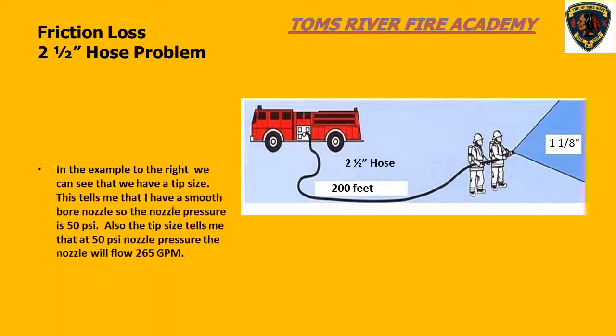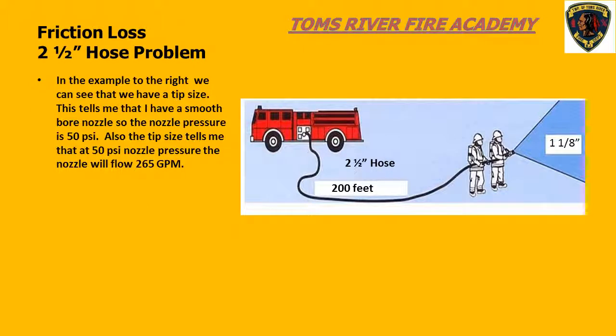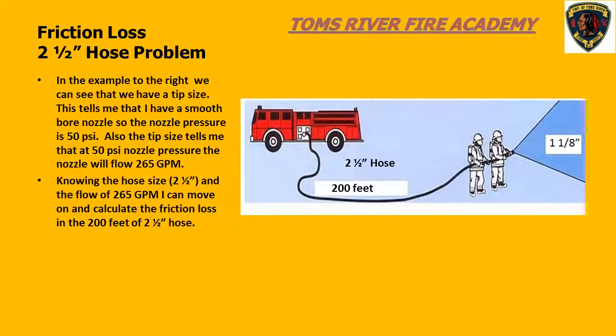In this example, we can see that we are using a nozzle with a tip size, so we know that we have a smoothbore nozzle. From lesson 2, we know that a smoothbore nozzle on a hand line requires 50 PSI nozzle pressure. We are given a tip size of 1⅛ inch. From our nozzle flow chart, we know that a 1⅛-inch tip will flow 265 gallons per minute. We also know the length, which is 200 feet. We now have all the needed information to use the rule of thumb formula for calculating friction loss in 2.5-inch hose.